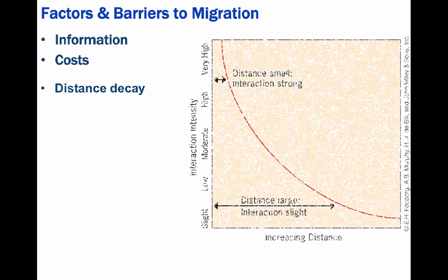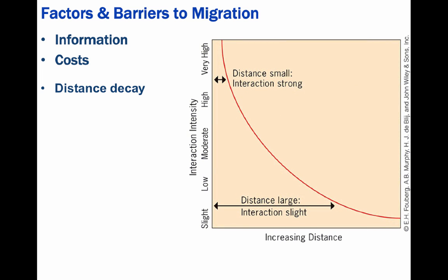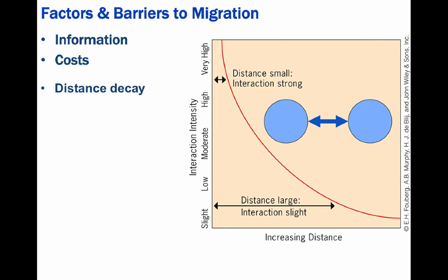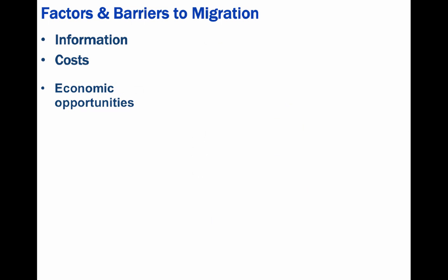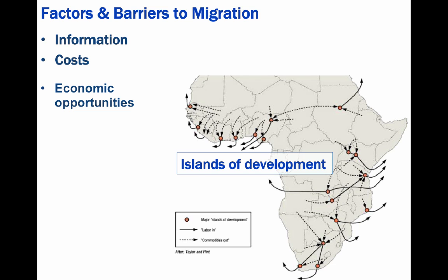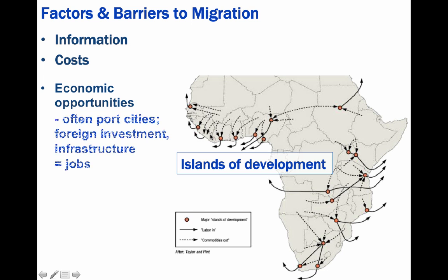Something else to consider are costs — financial, locational, or emotional costs. It's difficult to leave one's home to try a completely new way of life. What you see on this map are what European colonialism helped to establish, which are islands of development. Islands of development are often coastal cities because their establishment was based on access to trade.